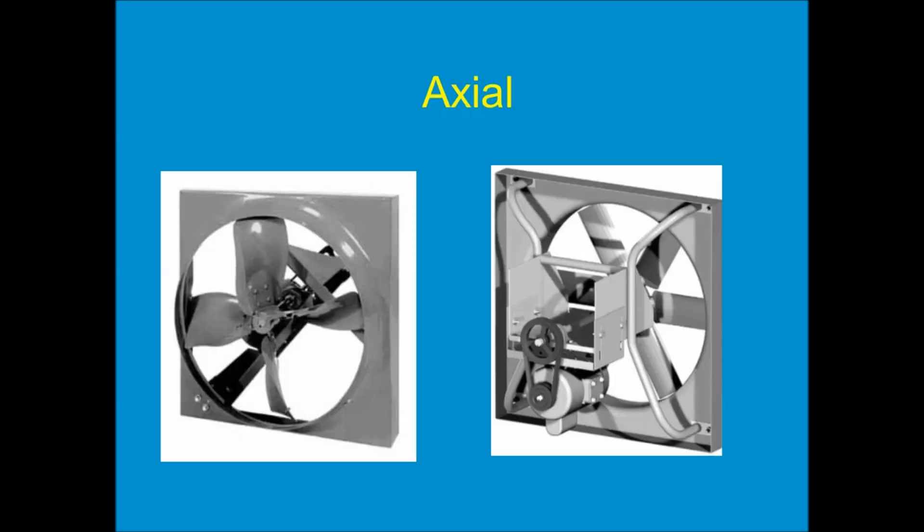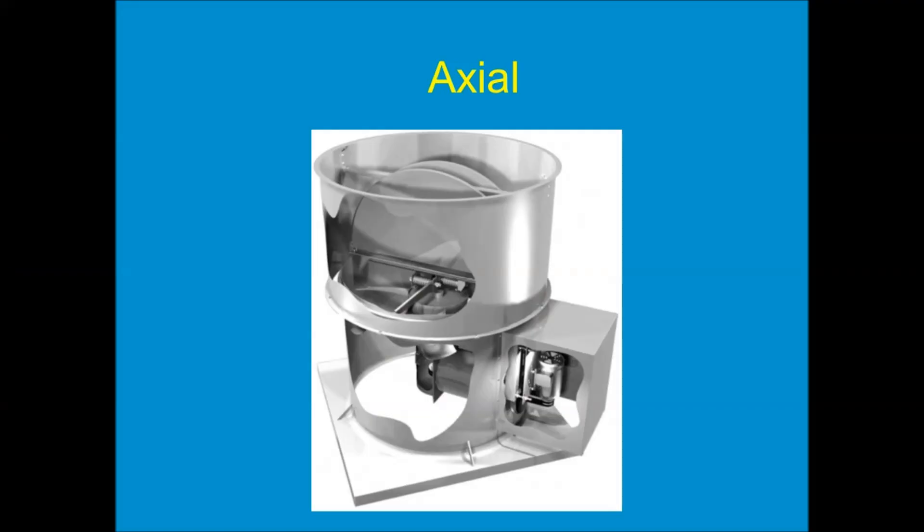With axial impellers, we often mount the impeller in a square frame and put it in a wall, giving us a very economical propeller fan that can ventilate a garage, warehouse, or factory. Sometimes we mount that axial impeller in a tube, point it upward, and we have a smoke exhaust fan that can be mounted on the roof of an atrium in a public building to evacuate smoke in the event of a fire.